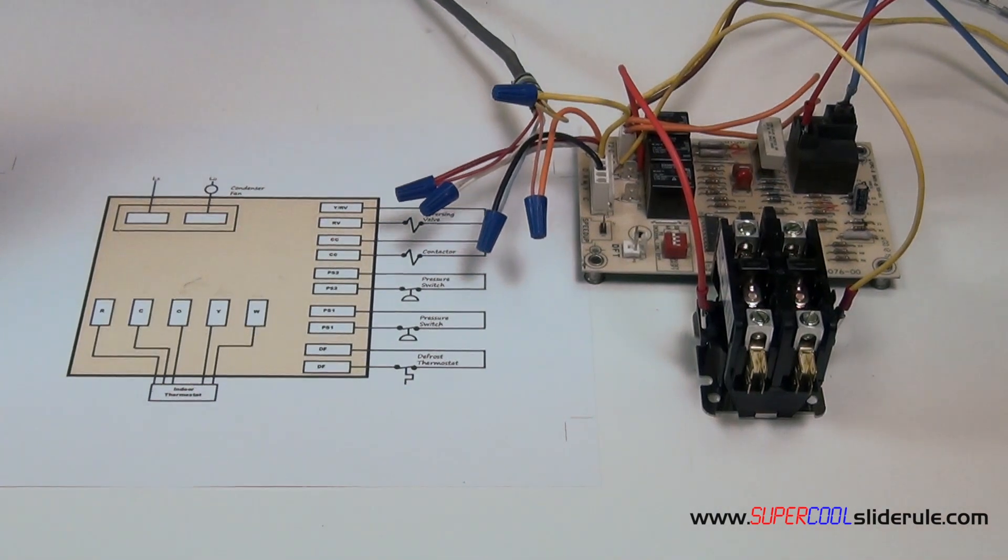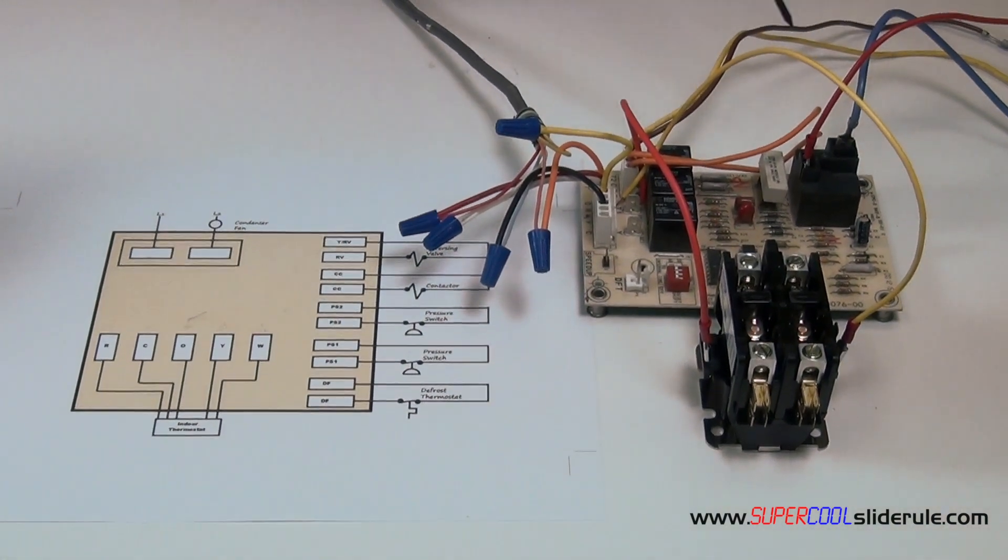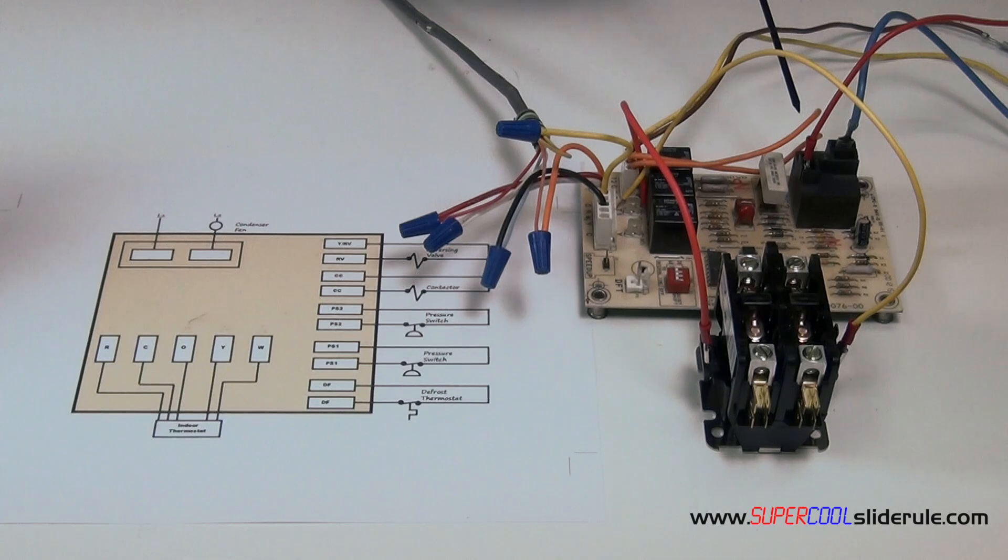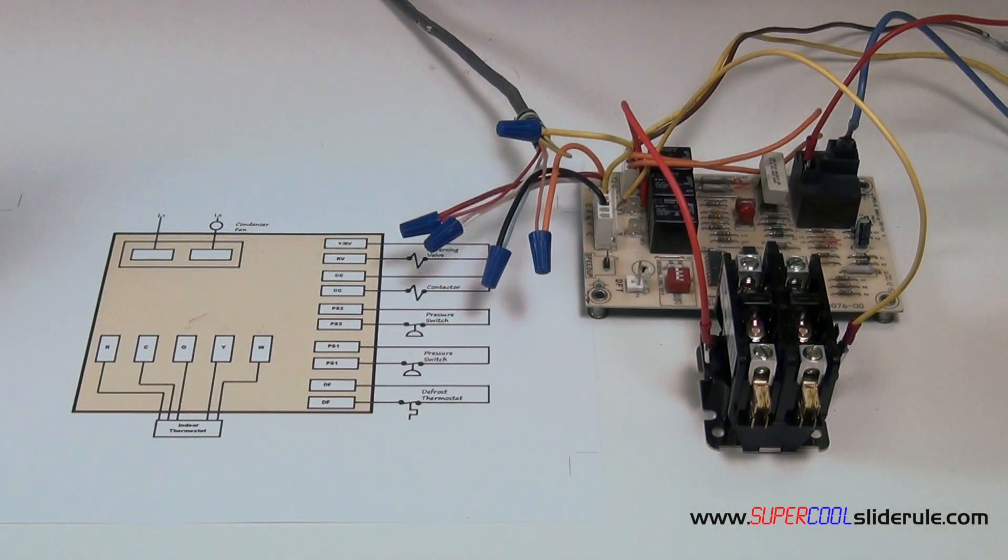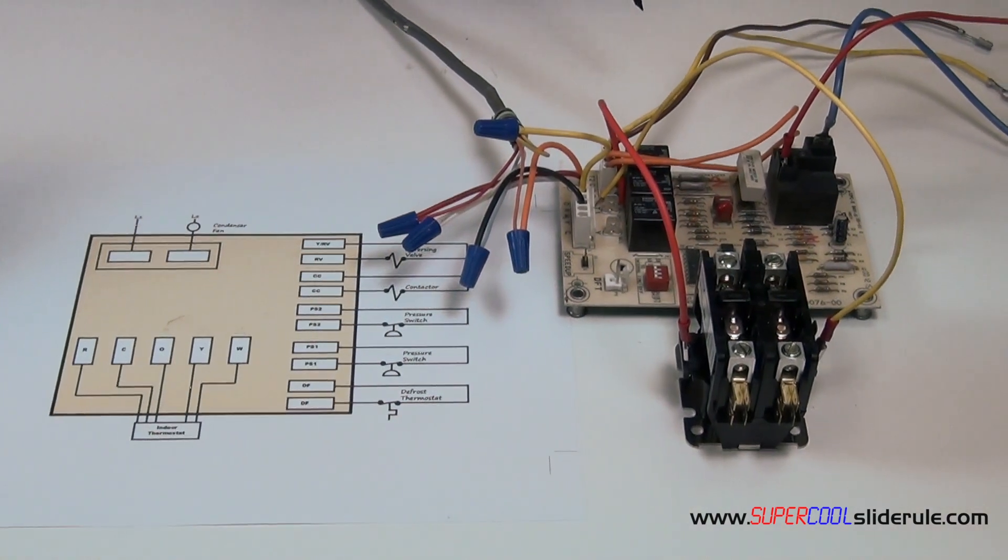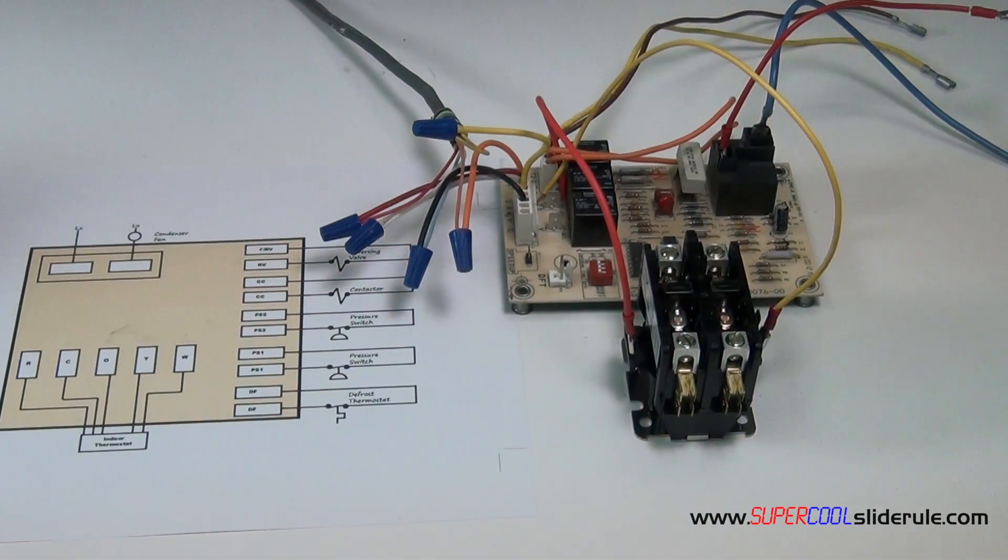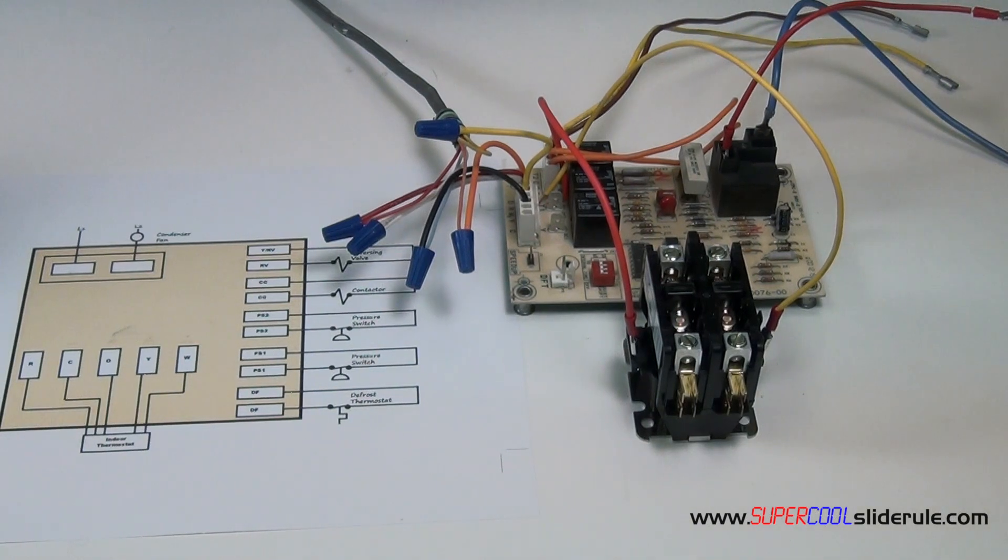The first thing that we do is identify the relay where the condenser fan motor is connected. These leads here would go all the way to the condenser fan motor. Ensure that the electricity to the unit is completely off including the indoor thermostat or the indoor unit. Make sure the electricity is killed as well.